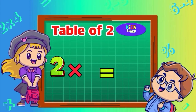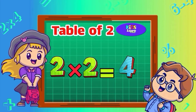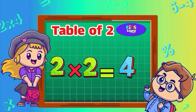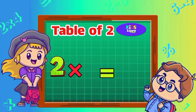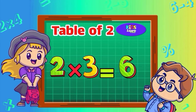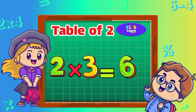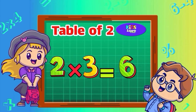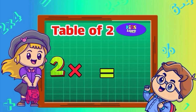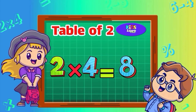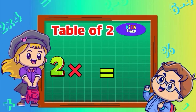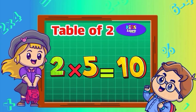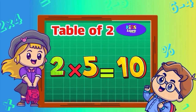Two twos are four. Two threes are six. Two fours are eight. Two fives are ten.